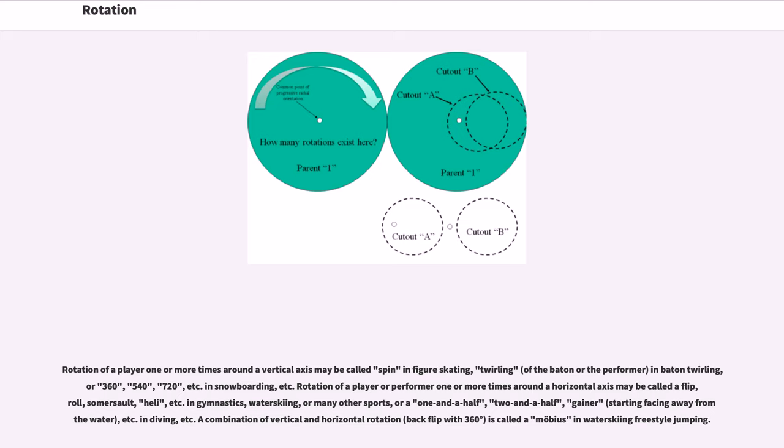Rotation of a player one or more times around a vertical axis may be called spin in figure skating, twirling in baton twirling, or 360, 540, 720, etc.